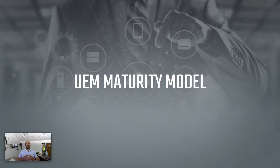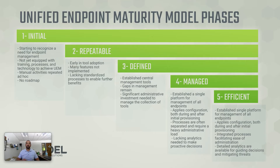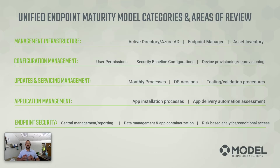With that, we created a UEM maturity model. The UEM maturity model uses phases that are not necessarily unique to this model, but the categories underneath are certainly unique. Today, we're going to be covering the initial phase and the category of management infrastructure. I would encourage you, if you have not watched video number one, to go back and watch it to get more of an understanding of the maturity model phases and those categories underneath.